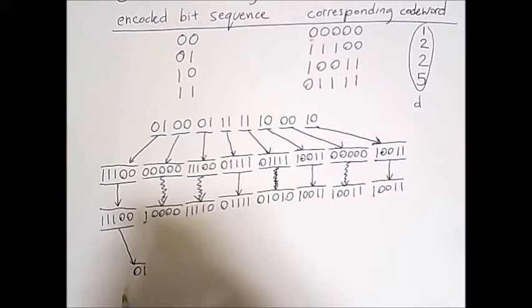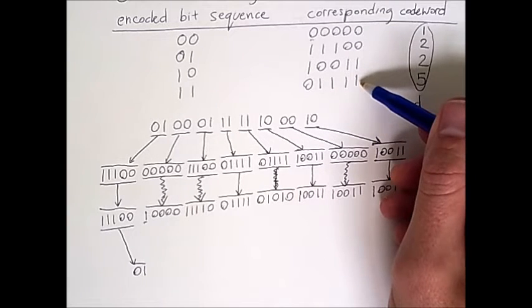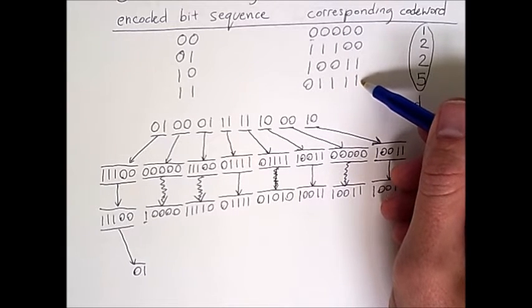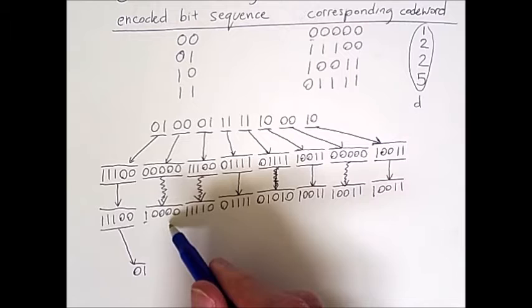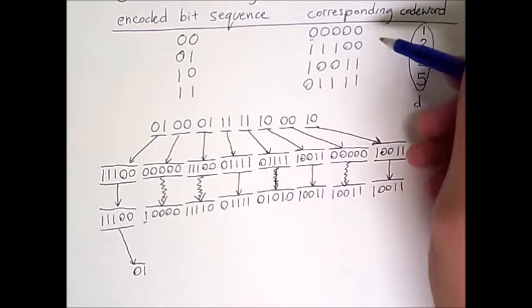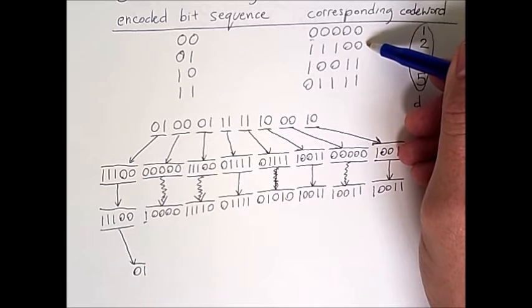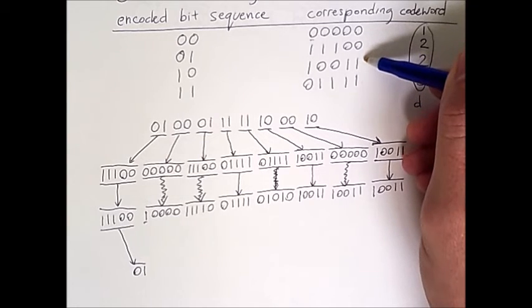Now having multiple bit errors is less likely than having fewer bit errors. If this were the actual original code word that had been sent, 5 bit flips would have to have occurred in order to get this result. That result is therefore very unlikely and we will therefore assume that's not what happened.